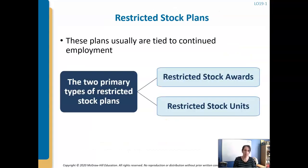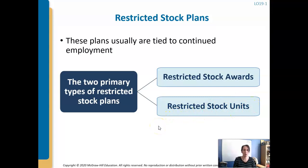Restricted stock plans — the main types are restricted stock awards or restricted stock units, RSAs and RSUs. There isn't a lot of difference between the two; the difference is primarily due to timing.